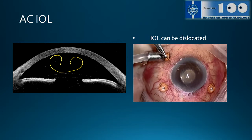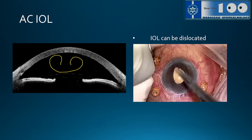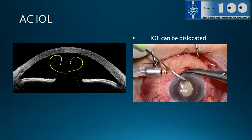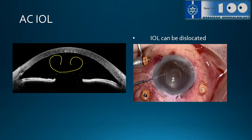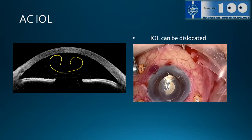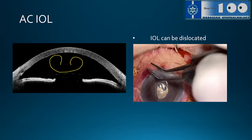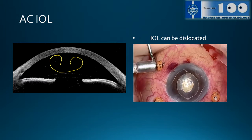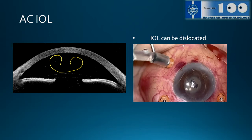The problem with anterior chamber IOL is that the lens can be dislocated — they are not always sitting right. When the lens is dislocated, the DMEK can go straight to the macula because these eyes are mostly vitrectomized, sometimes fully vitrectomized. Also, the DMEK graft can become entangled in the haptics, and it is very hard to move it from there. So what we do is stabilize the anterior chamber lens by suturing one of the haptics to the iris, which gives us more space to work, makes the ACD bigger, and improves the prognosis of the DMEK.